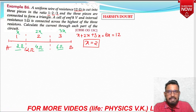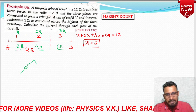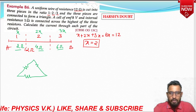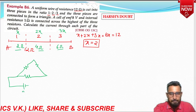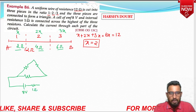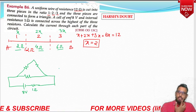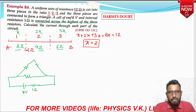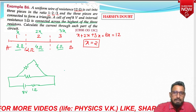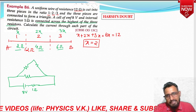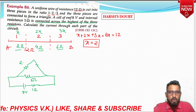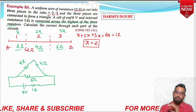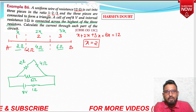All three pieces are connected in the form of a triangle. A cell of 8 volt with internal resistance 1 ohm is connected across the highest of the three resistors. The highest is 6 ohm, so the 8V cell connects across the 6 ohm side; the remaining sides are 2 ohm and 4 ohm. This is the finalized diagram. The question asks: calculate the current through each part.